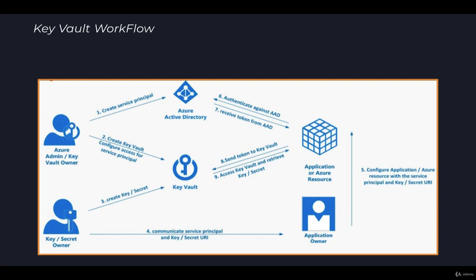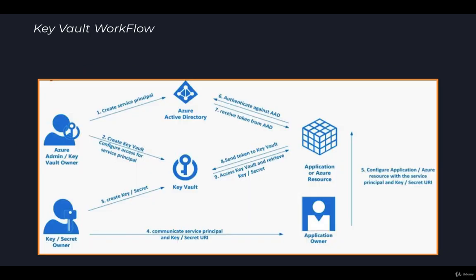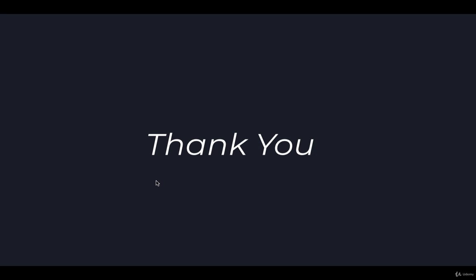This is how the Key Vault workflow happens — how the URI is given to the application and how that URI is used to access the secrets from the Key Vault. In this lecture we discussed the various ways to perform authentication to the Key Vault and then the Key Vault workflow. Hope you now have clarity on the Key Vault authentication process and workflow. Thank you for watching this lecture — see you in the next lecture.